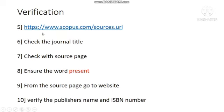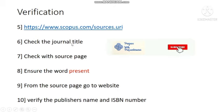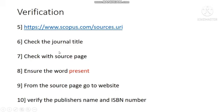For step five, go to scopus.com/sources and check the journal title. The first Excel sheet verification is over; now we are checking in the Scopus online database. Check with the source page using the journal title. I will explain the source page during the demonstration. Importantly, ensure the word 'present' appears — that indicates the journal is currently active in Scopus as of today.